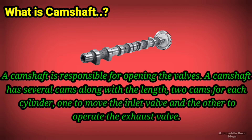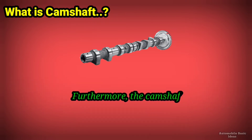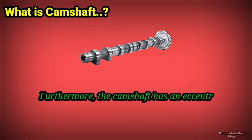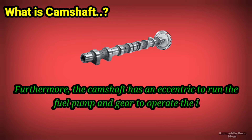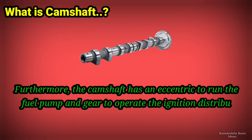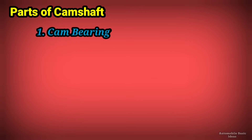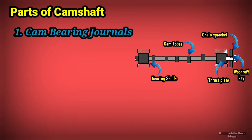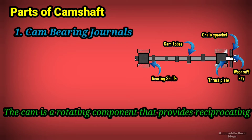Furthermore, the camshaft has an eccentric to run the fuel pump and a gear to operate the ignition distributor and oil pump. The parts of the camshaft include: one, cam bearing journals. The cam is a rotating component that provides reciprocating or oscillating motion to the follower by direct contact.